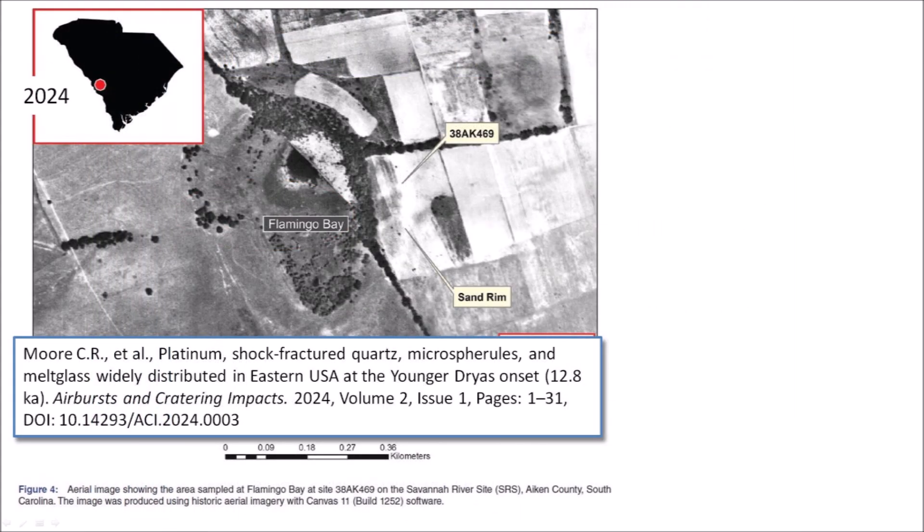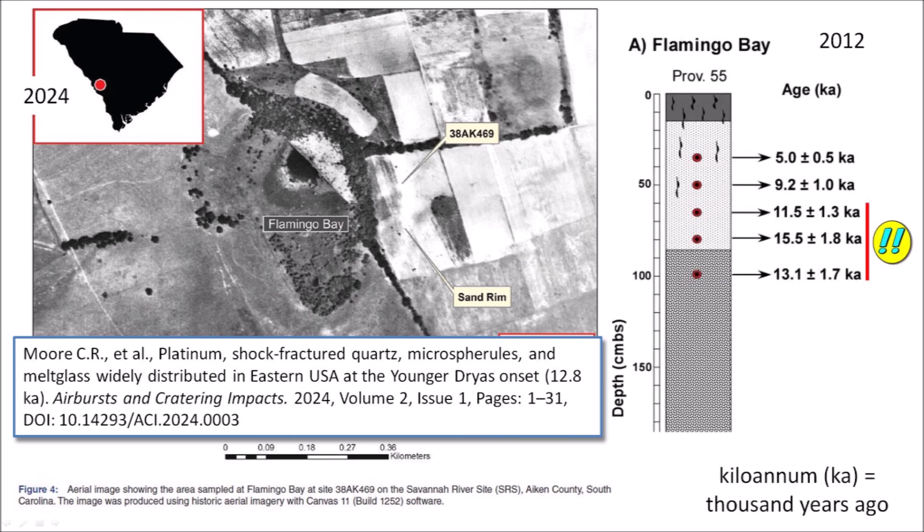An aerial image showing the location from where the Flamingo Bay sample was taken was reported in a paper published in 2024 by Christopher Moore. The paper explains that dating at Flamingo Bay has been difficult due to the acidic and heavily leached sandy sediments. No radiocarbon dates of Paleoamerican age have been obtained from this site, and OSL estimates have provided ages with large uncertainties. Five single-grain OSL dates from the 2009 field season returned minimum age model estimates ranging from 5.0 kPa at 35 cm below the surface to 15.5 kPa at 80 cm below the surface, with ages of 9.2 kPa and 11.5 kPa bracketing early archaic occupation at Flamingo Bay.